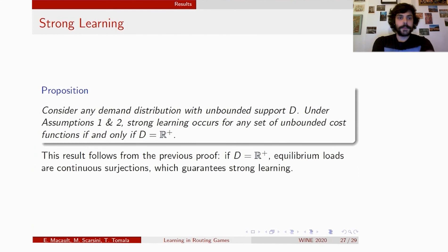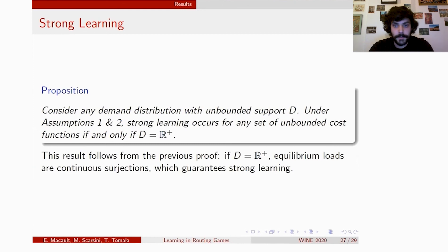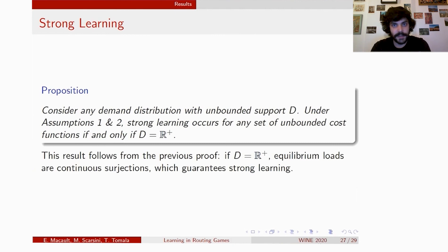Regarding strong learning: we identify the conditions under which strong learning occurs rather than just weak learning, as a consequence of our main theorem's proof. If you consider any demand distribution with unbounded support D, then under our main theorem's hypotheses, strong learning occurs for any set of unbounded cost functions if and only if the support of demand D equals R+. If D equals R+, equilibrium loads on every edge are continuous surjections from R+ to R+, which guarantees that cost functions are explored at sufficiently many different points such that, given a finite state space, strong learning occurs in the long run.